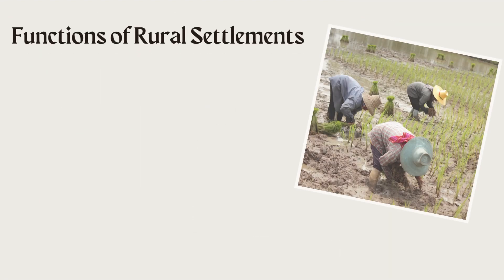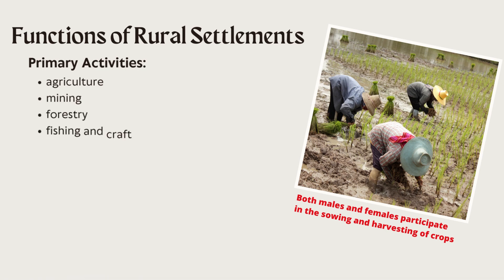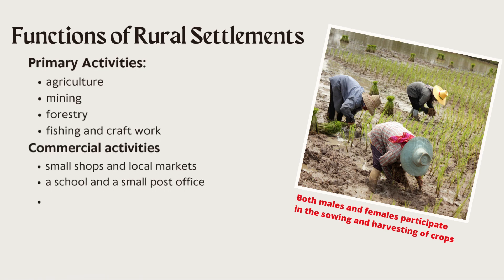Now we are discussing functions of rural settlements. In rural settlements, people are involved in primary activities like agriculture, mining, forestry, fishing, and craftsmen. They are also involved in some commercial activities like small shops, local markets, a school, and a small post office.